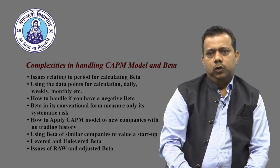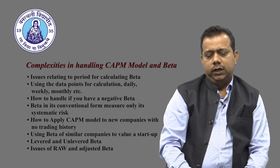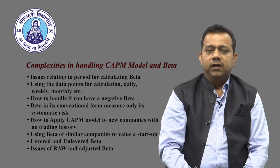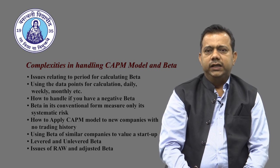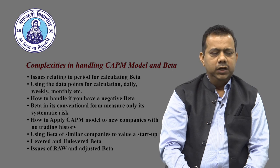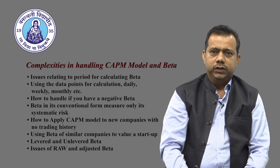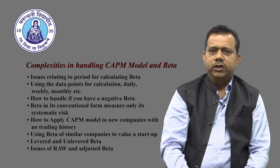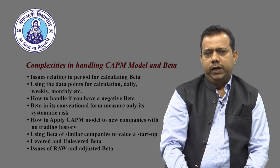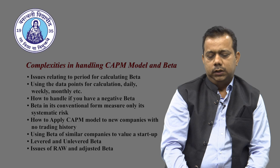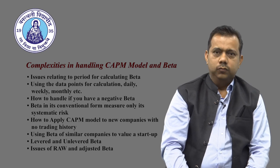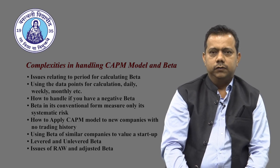There is also the problem of negative beta. Though practically it is not possible, if you work with some numbers or look at a very short period where securities moved in the opposite direction of the index, you may end up with a negative beta. Unfortunately, CAPM does not work with a negative beta because it requires a positive number to give you an answer.